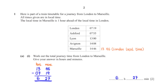Here is part of a train timetable for a journey from London to Marseille. All times given are in local time. The local time in Marseille is one hour ahead of the local time in London. Work out the total journey time from London to Marseille. Give your answer in hours and minutes.